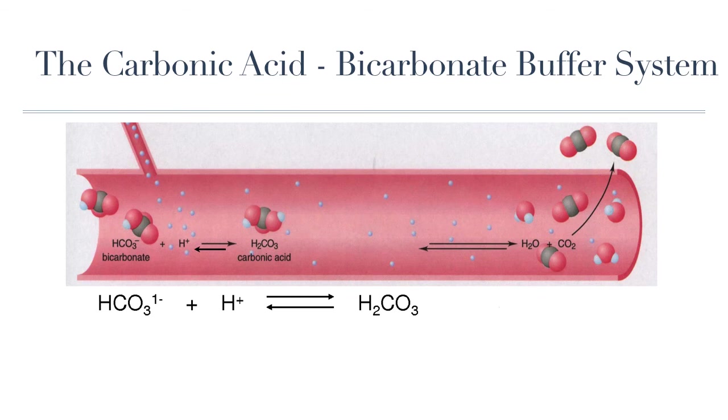So, our blood contains a carbonic acid bicarbonate buffer system. It consists of a weak acid called carbonic acid and its conjugate base, which is bicarbonate ion. And both together create this buffer solution that is found within our blood. What does that mean? Well, it means that if an acid is added into our blood, essentially adding hydrogen ions or protons, the hydrogen ions will combine with a bicarbonate ion in order to form carbonic acid, essentially pushing the equation towards the right.